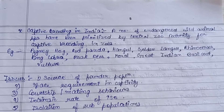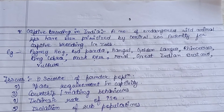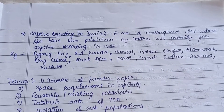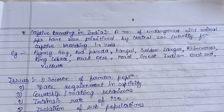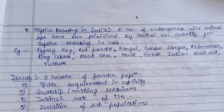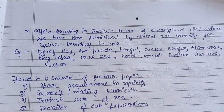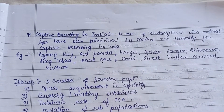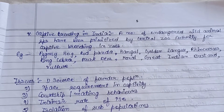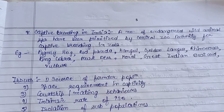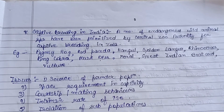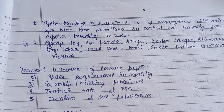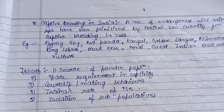Regarding captive breeding in India, a number of endangered wild animal species have been prioritized by the Central Zoo Authority for captive breeding in zoos — for example, pygmy hog, red panda, hangul, golden langur, rhinoceros, king cobra, musk deer, monal, great Indian bustard, and vulture.